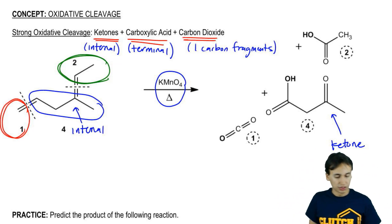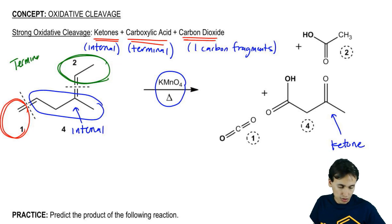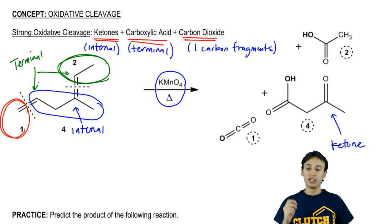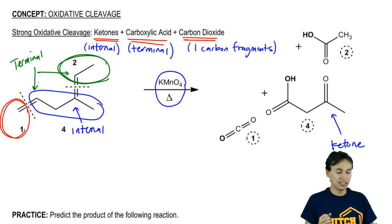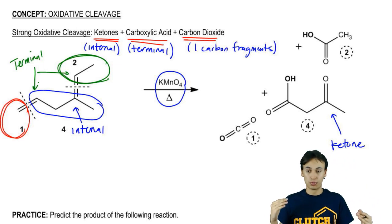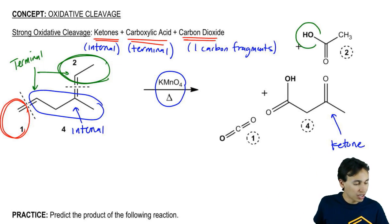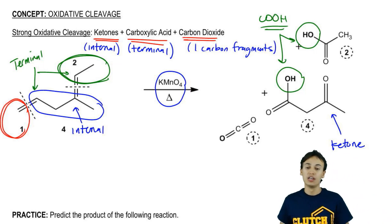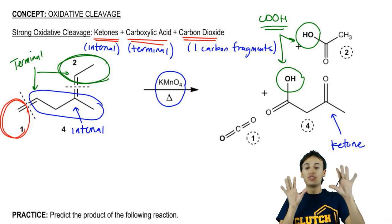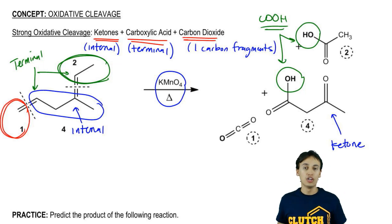Now over here, we have examples of terminal. Terminal would be like this and like this. Notice how they both are at the end of a chain and they have an H on them. The biggest thing here is that it has at least one H coming off. It's not surrounded by R groups on both sides. It has an H. So the fact that it has an H means that that H can be oxidized to OH. That's when we get our carboxylic acids, because we had one hydrogen that could be broken off into two different carboxylic acids.